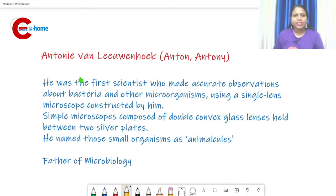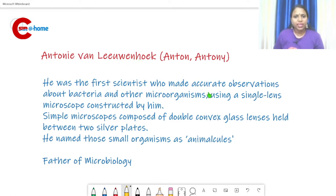The first name is Anton van Leeuwenhoek — both 'Anton' and 'Antonie' are correct spellings. He was the first scientist who made accurate observations about bacteria or microorganisms, using a single lens microscope constructed by himself.